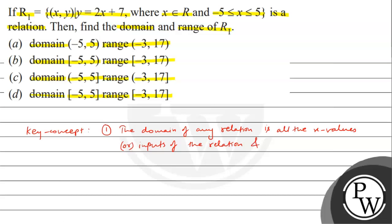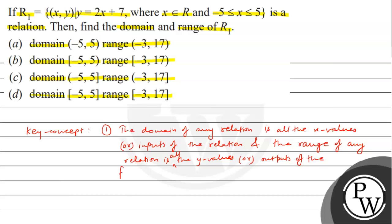And the range of any relation is all the y values, or outputs of the function. The set of inputs we call domain and the set of outputs we call range. Inputs means x and outputs means y. Now we use this key concept and solve this question.